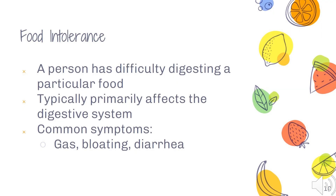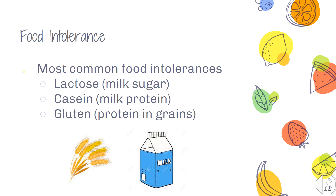Moving on from food allergies, a food intolerance is not an immune response but is typically a difficulty with digesting a certain food. It affects the digestive system, and symptoms could manifest as gas, bloating, or diarrhea. Three of the most common food intolerances are lactose, casein, and gluten. Lactose and casein are both components of milk but they're separate — if someone has a lactose intolerance they could drink lactose-free milk, but if someone had a casein intolerance, that wouldn't be an appropriate solution, so it's good to understand the specifics of each child's needs.